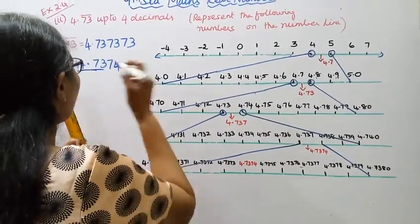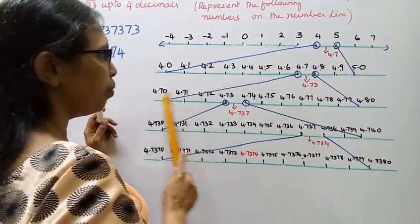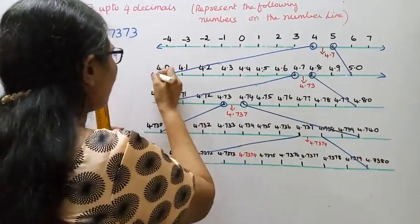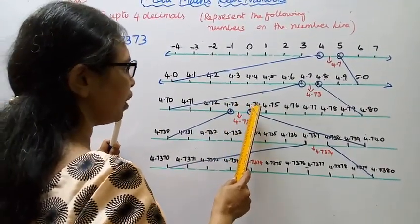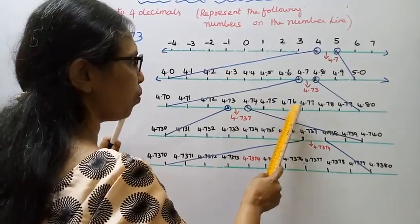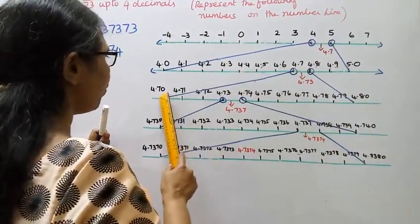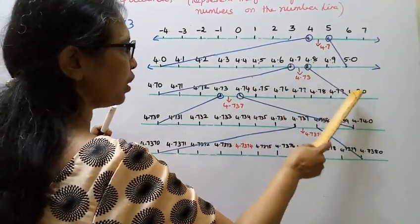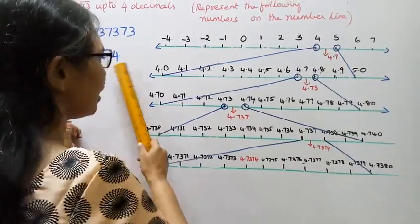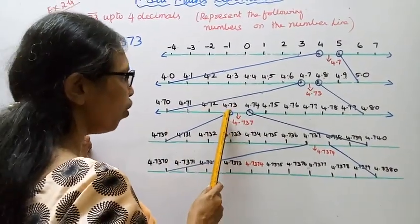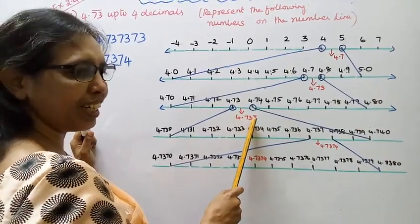Now zoom in. 4.70 to 4.80. Mark 4.70, 4.71, 4.72, 4.73, 4.74, 4.75, 4.76, 4.77, 4.78, 4.79, 4.80. Now 4.737 falls between 4.73 and 4.74.